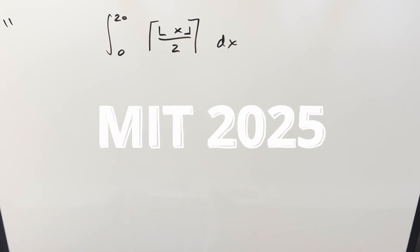Okay, we have here another integral from the MIT integration B2025. This was number 11. We've got the integral from 0 to 20 of the ceiling function of the floor function of x over 2 dx.